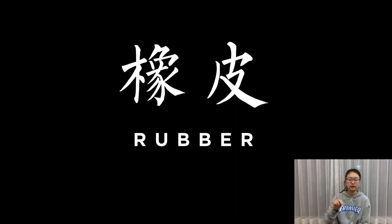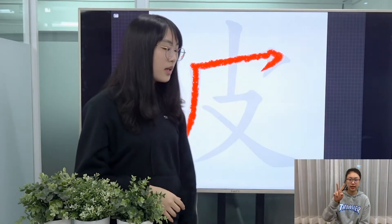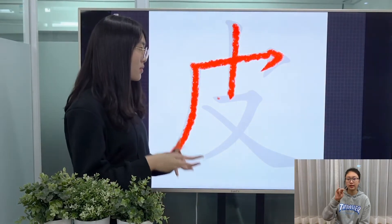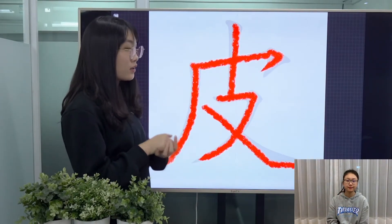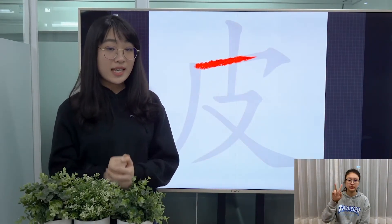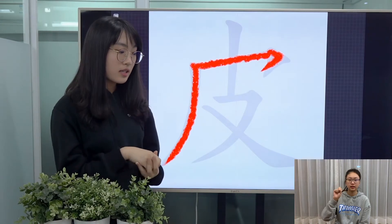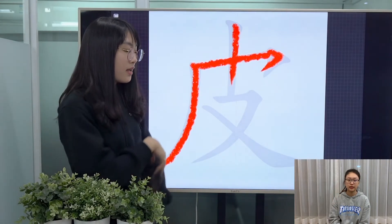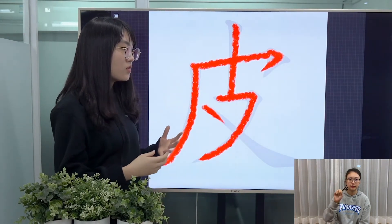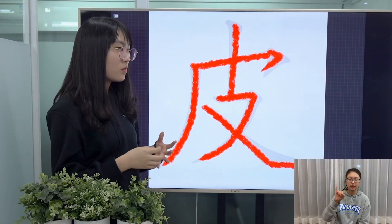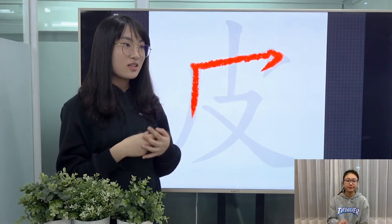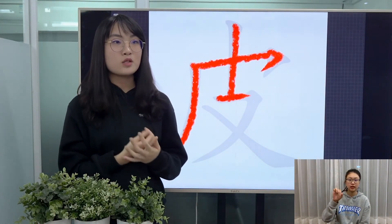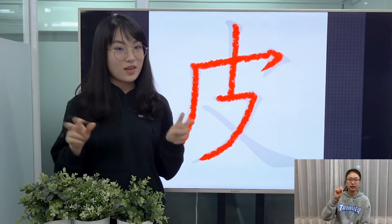And 象皮 means rubber. As an adjective, it can mean something sticky or soggy. You can also refer to a kid as naughty, and often it can also refer to thick-skinned, or someone who doesn't care much about his face.